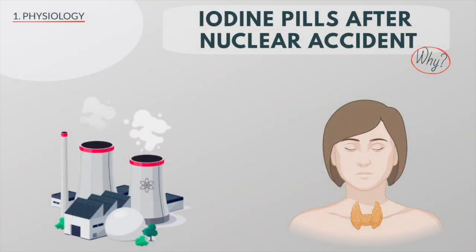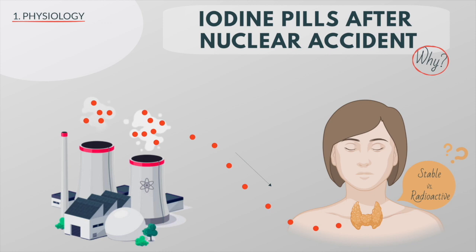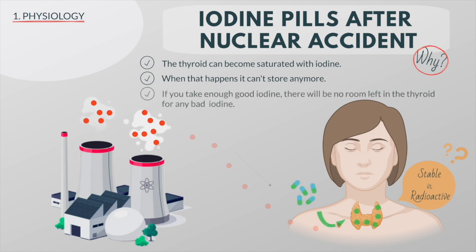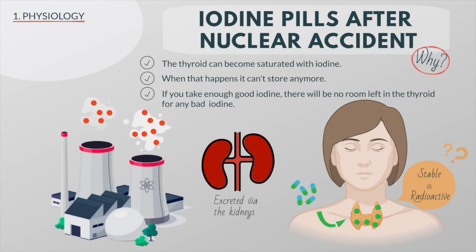Do you know why people take iodine pills after a nuclear accident? When there's an explosion at a nuclear power plant, radioactive iodine is one of the first substances released into the atmosphere. The thyroid absorbs available iodine from the bloodstream — it cannot distinguish between stable regular iodine and radioactive iodine and will absorb whatever it can. However, the thyroid can become saturated with iodine, and when that happens it can't store any more. So the theory is that if you take enough good iodine — iodine pills — there will be no room left in the thyroid for any radioactive iodine. That radioactive iodine should then simply pass through the body and get excreted via the kidneys. This is why taking iodine pills can help protect you from radioactive iodine.